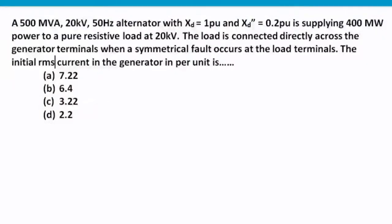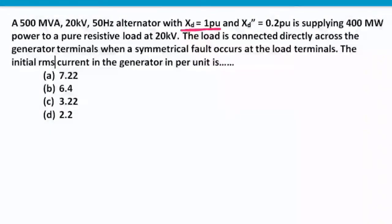The given data: 500 mega volt ampere is the alternator rating, terminal voltage is 20 kV, frequency is 50 hertz. Xd is the direct axis synchronous reactance, and Xd double prime is the sub-transient direct axis synchronous reactance. The sub-transient reactance Xd double prime acts only when the fault occurs.